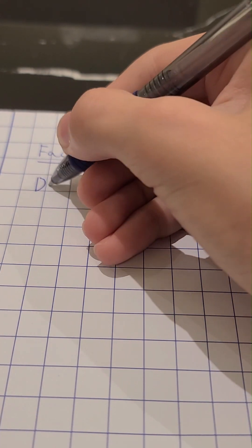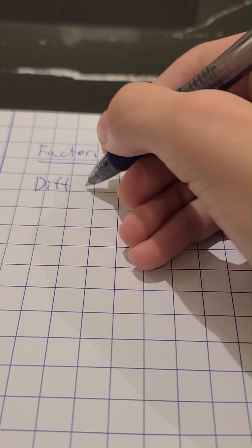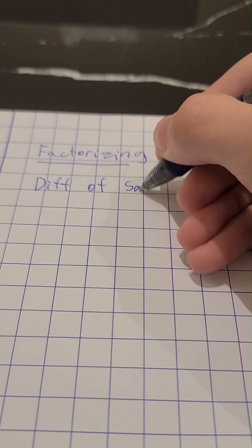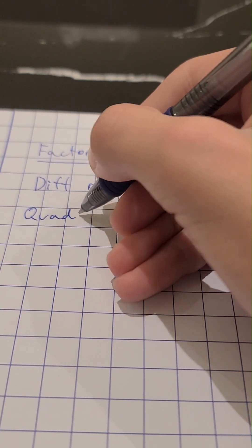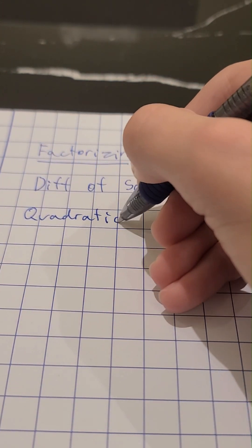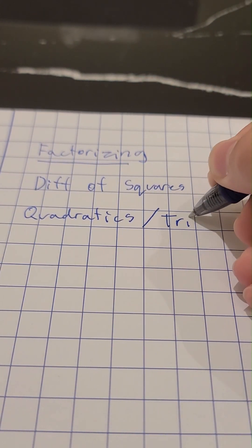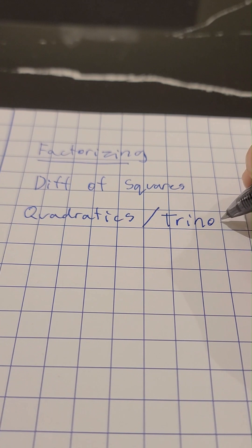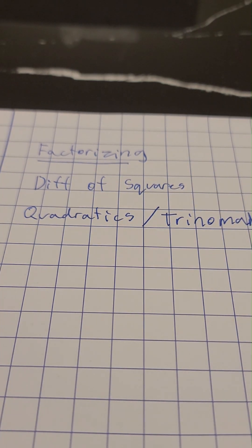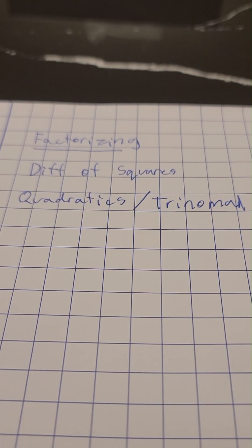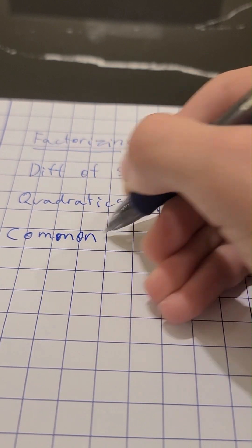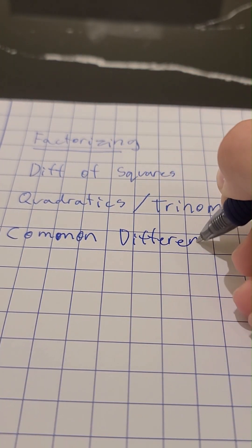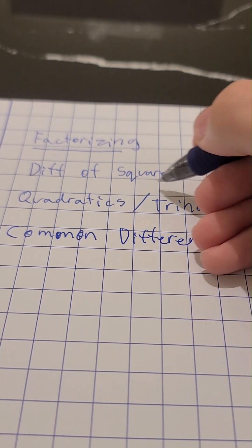When it comes to factorizing, there are three main topics. Firstly, there is difference of squares, and then there are quadratics and trinomials. And then lastly, there is common differences. Now that you know the three main topics of factorizing, we will be talking about quadratics and trinomials today.